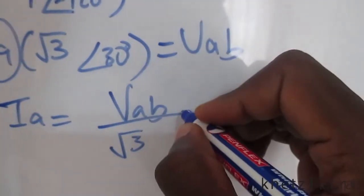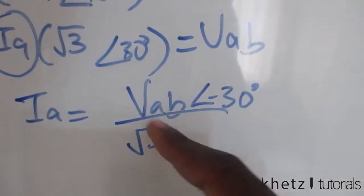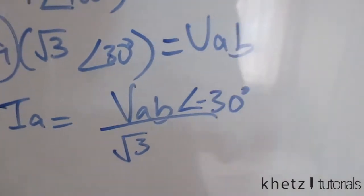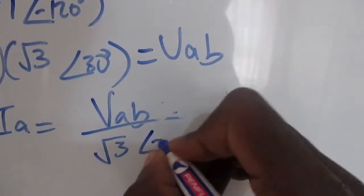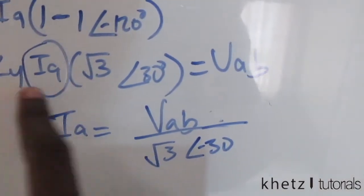Your VAB divided by √3∠30°, which means you actually have this at the top as -30°. You can leave it at the bottom, doesn't really matter. And also you have Zy, so Zy everything just goes there as it is.